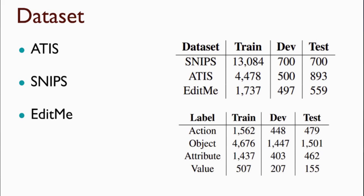In our experiments, we evaluate the proposed model on three benchmark datasets. The ATIS and SNIPS datasets are well-known datasets for this task. In addition, we evaluate our model on a new dataset called EditMe, which contains sentences for editing an image using natural language instructions and consists of four different labels. SNIPS is the largest dataset in our experiments, and in EditMe, the label 'object' is the most frequent label.